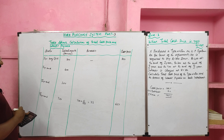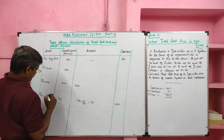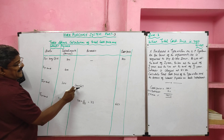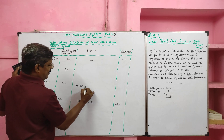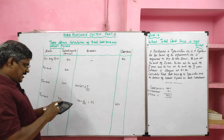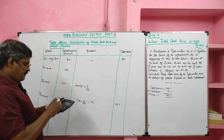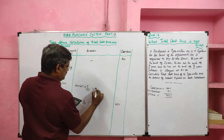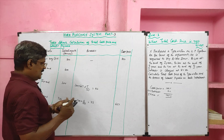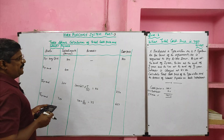Moving to the second year interest calculation: second year installment is 300, plus the third year cash price of 667. So the total outstanding at the end of the second year is 967. Interest = 967 × 5/105 = (300 + 667) × 5/105 = 46 rupees. Total payable 300 minus 46, so balance 254 rupees is the amount paid toward the principal.